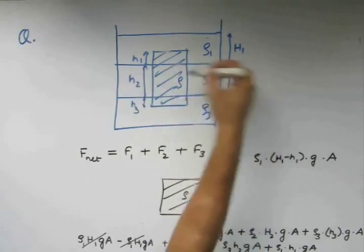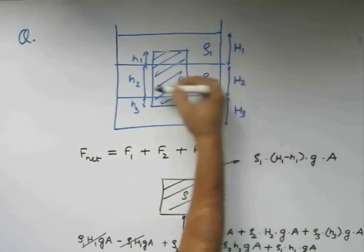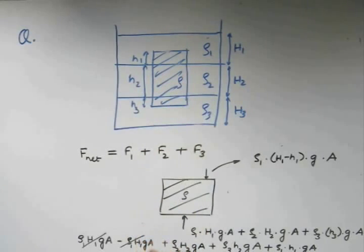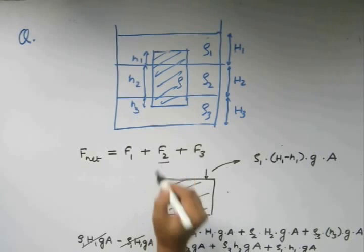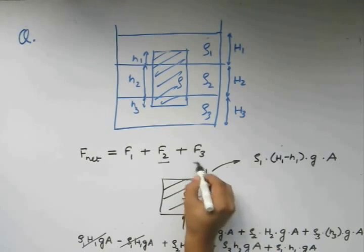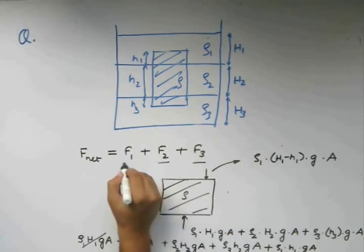If we look at this setup, H2 is nothing but this height again. So we can also write H2 being equal to small h2 and this quantity being this. This is F2, this is F3, and this is F1.